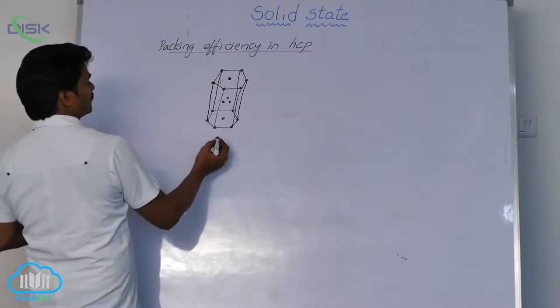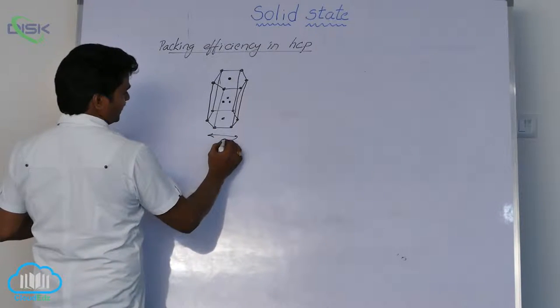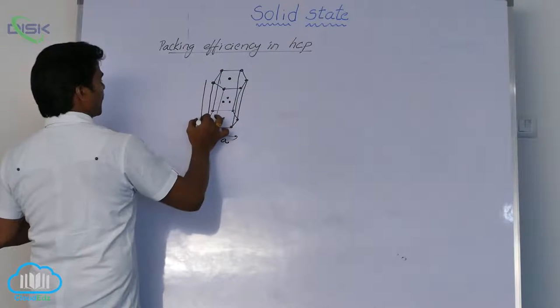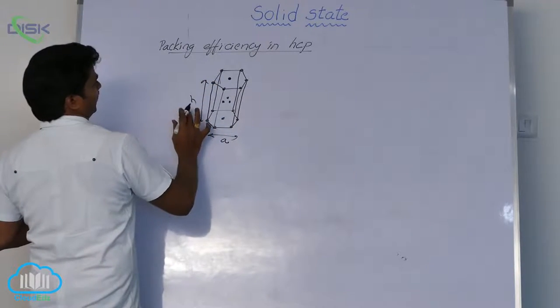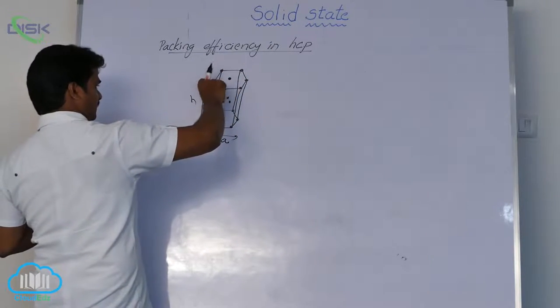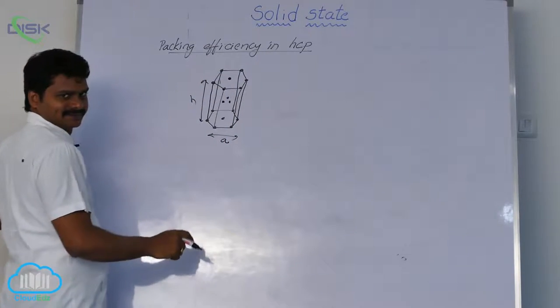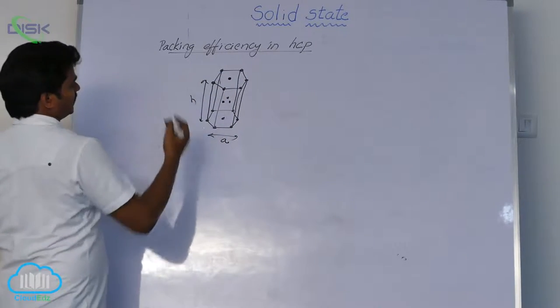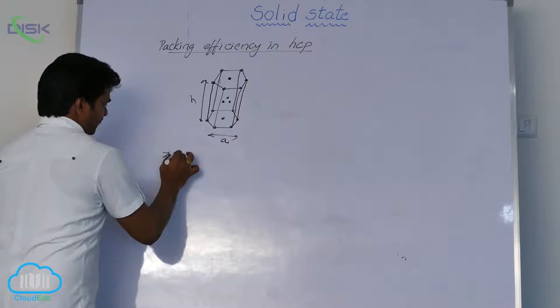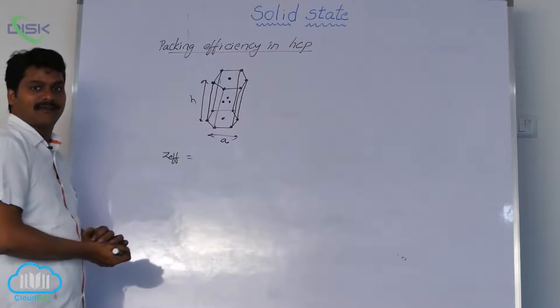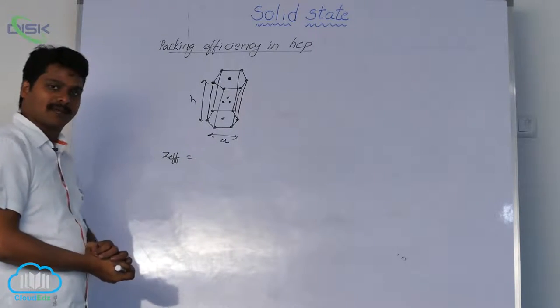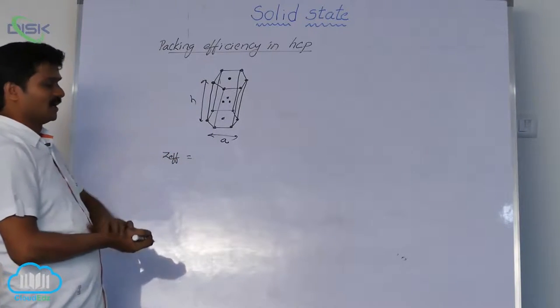For that, here first we have to find out the base area A, and we have to calculate the height, that means length between two hexagons. First let us calculate Z-effective, which is effective number of atoms. Effective number of atoms in HCP, how to calculate?